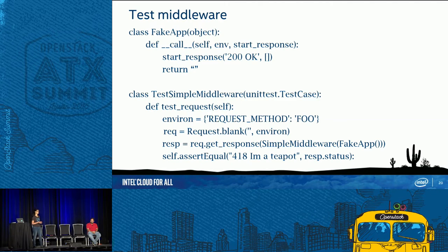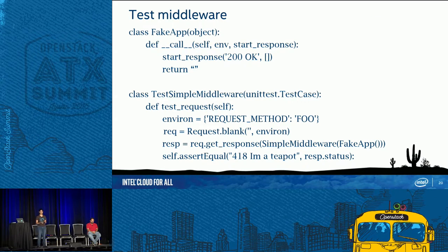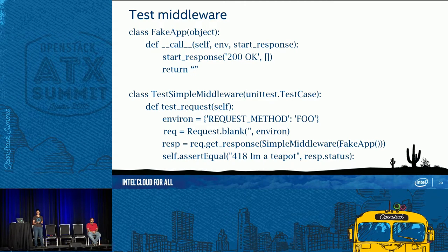Testing the middleware is straightforward. I am faking my application — all I really want to test is my middleware. I pass a request method of 'foo', call a request URL, get my response, and assert that the status is equivalent to what is expected.